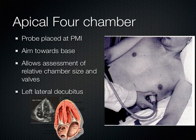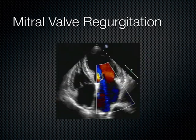The apical 4 chamber is obtained by putting the indicator to the patient's right, and you're really going for that PMI — that place on the chest where the apex of the heart comes to the chest wall. This is made easier when you put the patient in left lateral decubitus, as you're about to see.